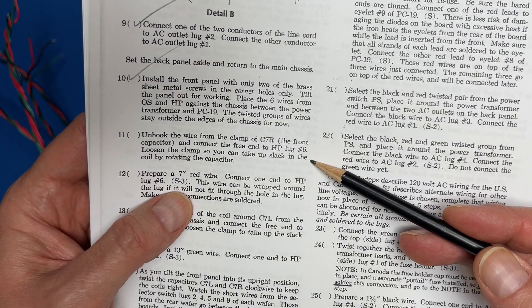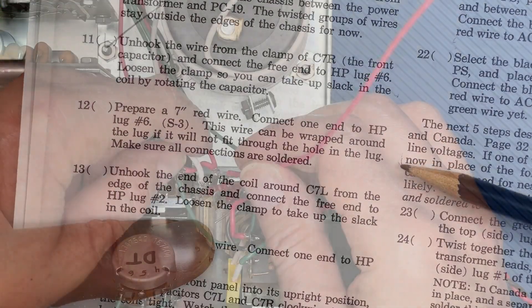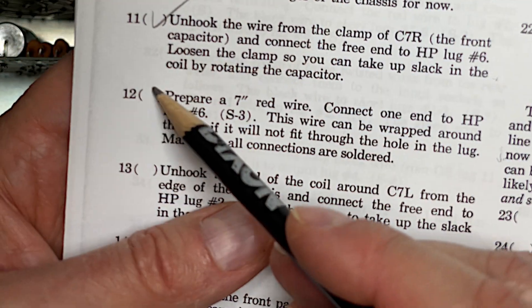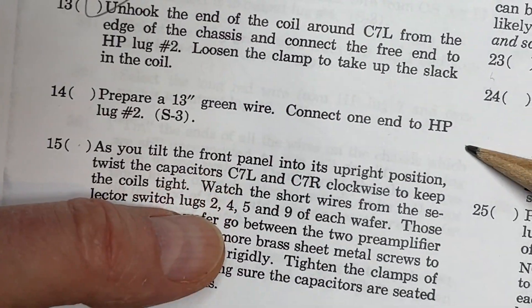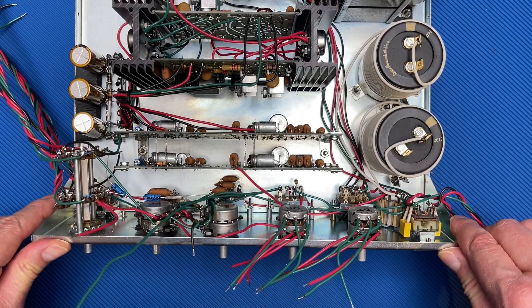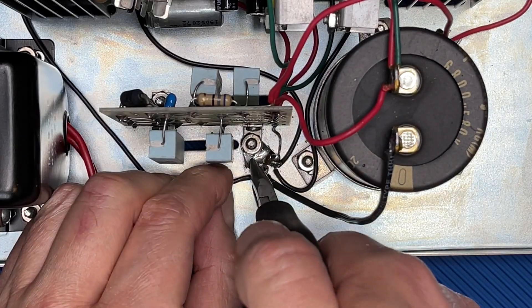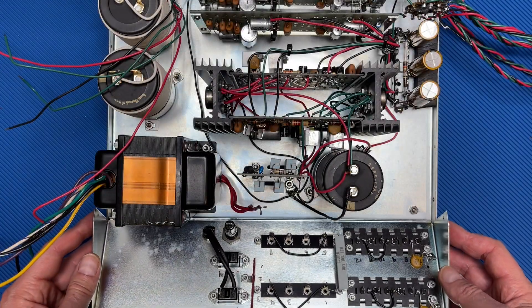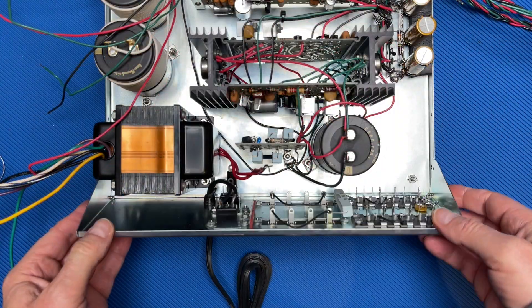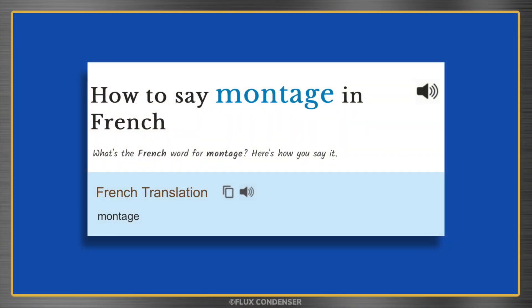Step 11: connect the end of the coiled wire from C7R to HP6. Here's the wire that's connected to HP, which is the headphone jack. Step 11, done. Step 12: connect a 7-inch red wire to HP6. Step 12, done. Step 13: connect the end of the coiled wire from C7L to HP2. Step 13, done. Step 14: connect a 13-inch green wire to HP2. Step 14, done. Step 15: as you tilt the front panel into its upright position, twist capacitors C7L and C7R clockwise to keep the coils tight. Looks good. Step 15, done. Step 16: connect the long black wire from OS 12 to the ground lug. Step 16, done. Step 17: install the back panel with only two corner screws and tilt the panel out for working. Step 17, done. Steps 18 through 54 have us complete the wiring for the amplifier. Can you say, Montage!